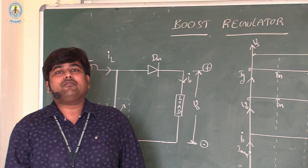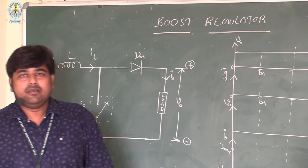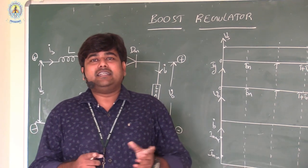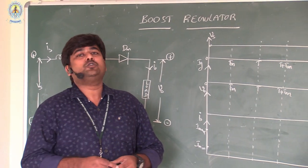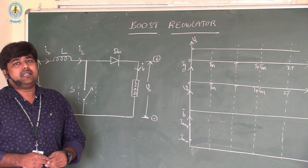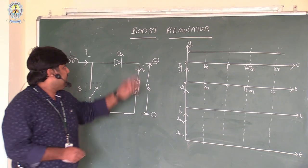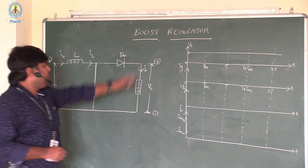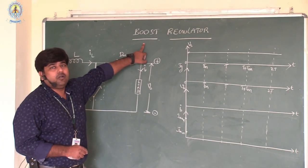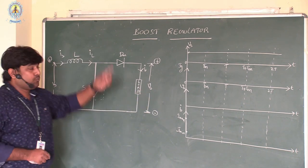Boost regulator is one type of switching mode regulator. A regulator means it is a DC to DC converter which is used to convert the available fixed DC input voltage to variable DC output voltage. In a boost regulator, the output voltage is more than the input voltage — that is called a boost regulator.